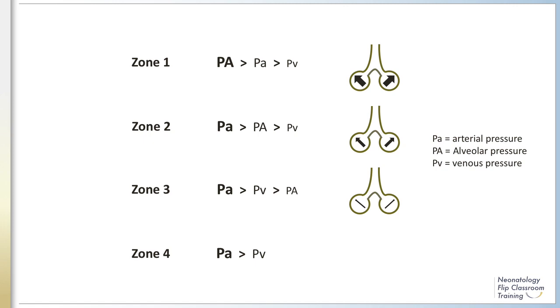In zone three, there is a shift and venous pressure exceeds alveolar pressure, and now pulmonary blood flow is dependent on the gradient between pulmonary arterial and venous pressures. The entire neonatal lung functions in zone three with pulmonary blood flow driven by pulmonary arterial and venous pressures. However, in instances of air trapping or alveolar distension, which increases the alveolar pressure, the lung may functionally shift to zone one or zone two, resulting in decreased pulmonary blood flow.